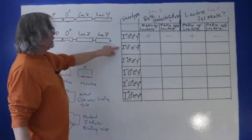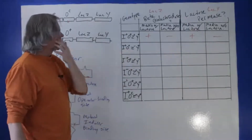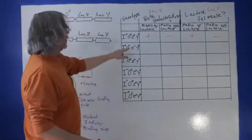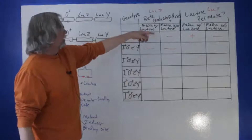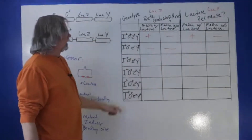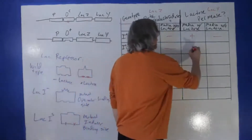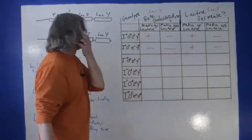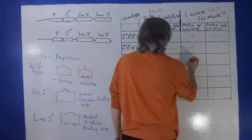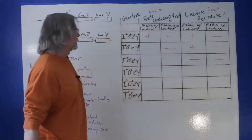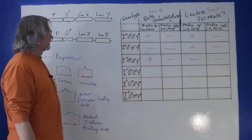Next: repressor positive, operator positive, lacZ negative, lacY positive. The lacZ negative indicates a null allele, so you can't get expression of beta-galactosidase with or without lactose because the gene itself is mutated. For lacY, it's still inducible because it's connected to the wild-type operator — present with lactose, absent without. The next genotype is similar but with lacY mutated instead, so lactose permease won't be expressed, but beta-galactosidase is still inducible.